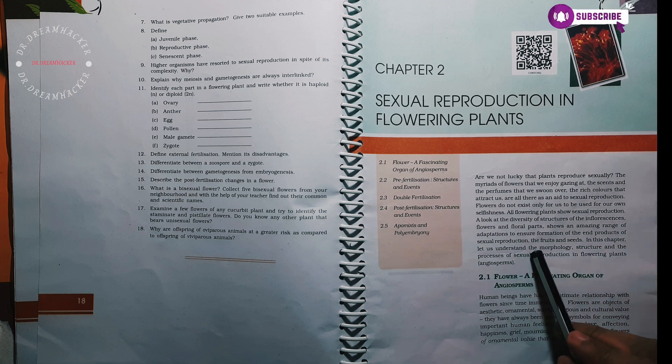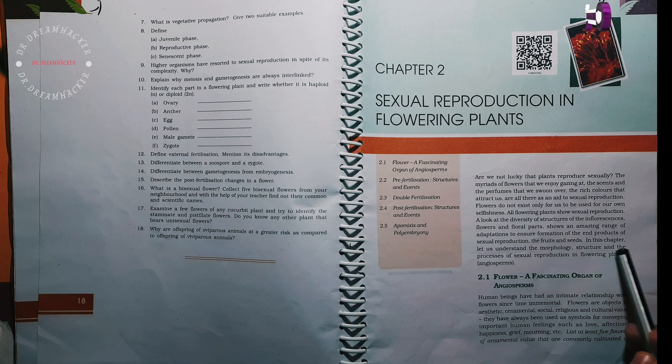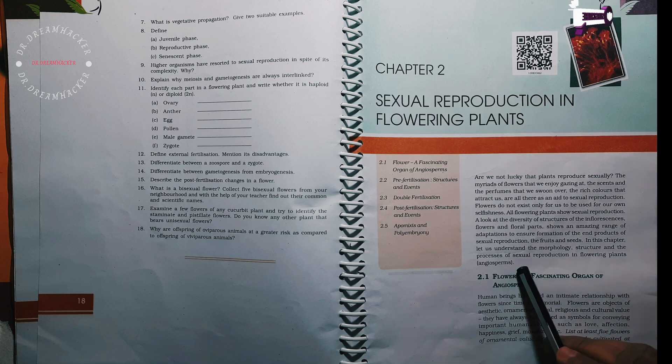In this chapter, let us understand the morphology, structure and the process of sexual reproduction in flowering plants, angiosperms.